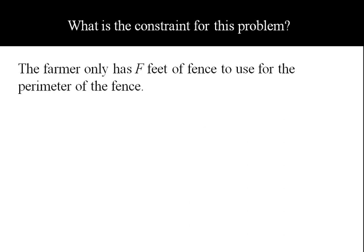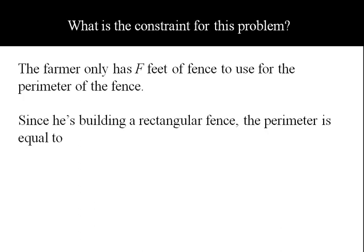What's the constraint? The farmer has F feet of fence to use for the perimeter. Since it's a rectangular fence, we can come up with a formula for the perimeter: length plus width plus length plus width - that's the four sides. The constraint is that those four sides have to add up to F, the number of feet the farmer has in terms of fencing available. We can simplify this and write it as 2L plus 2W equals F. This is our constraint.